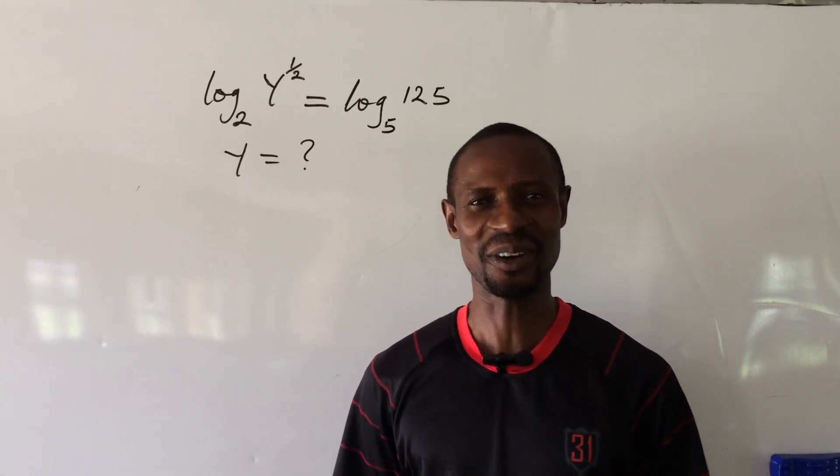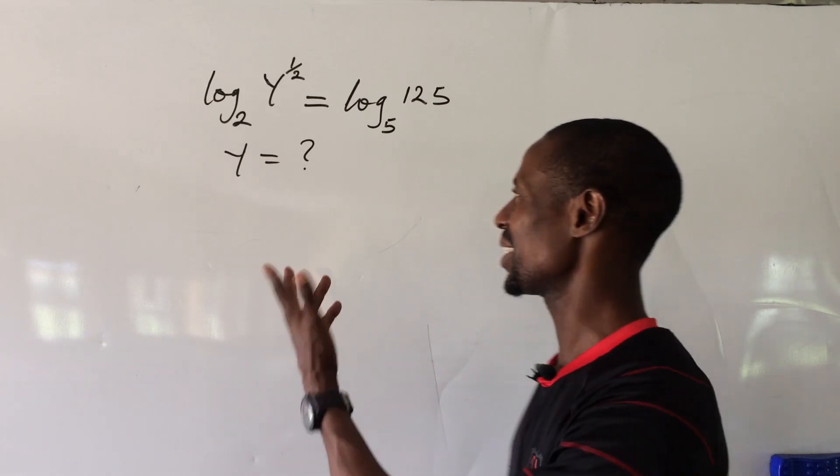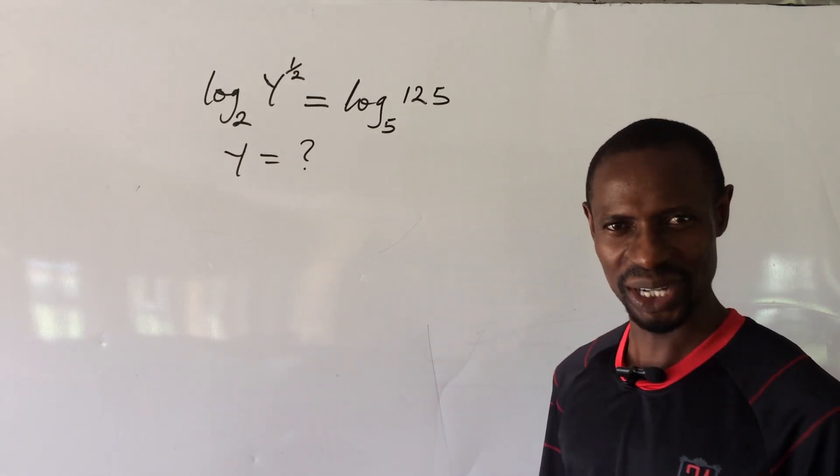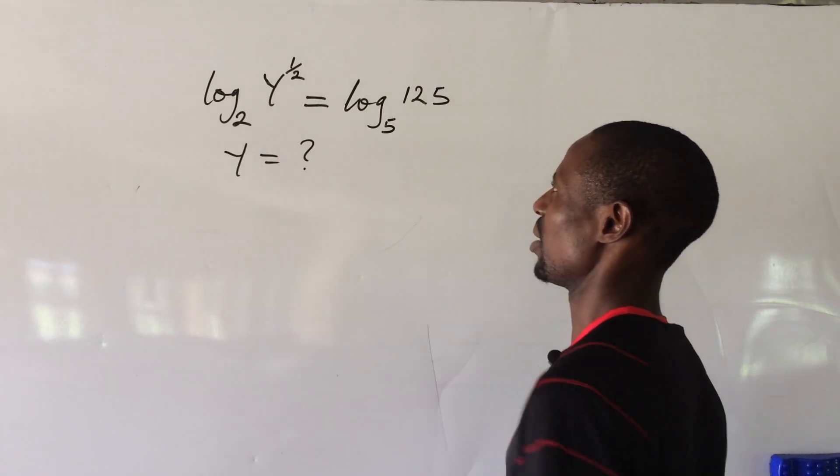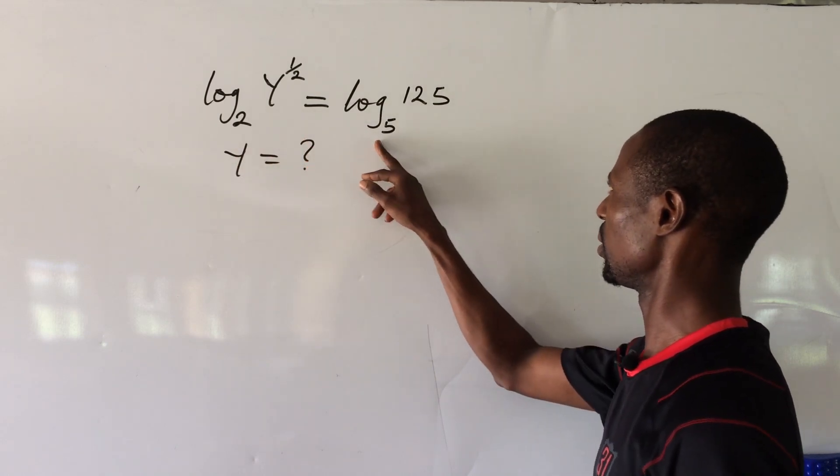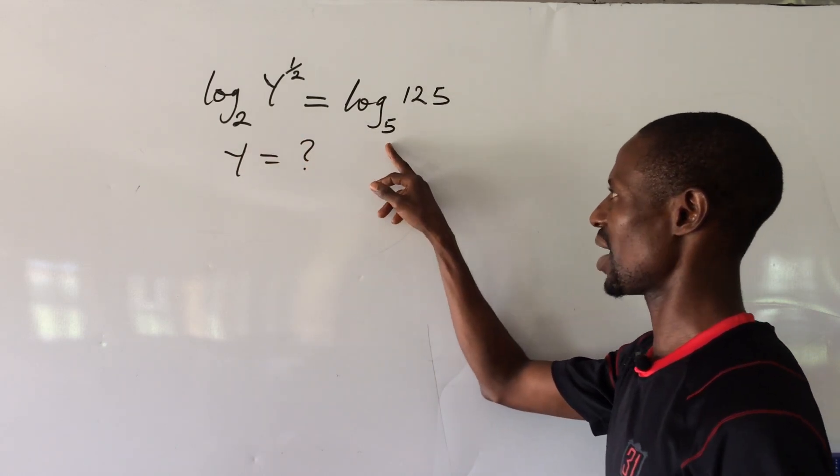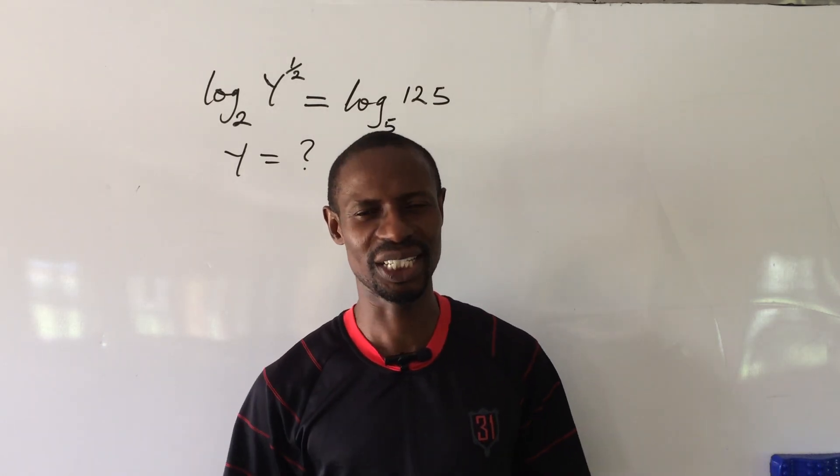Welcome everyone, this is Online Math TV. My name is Jakes Animal and today we have a challenge on logarithms - a simple one at that. The question reads: log y to the power of 1/2 base 2 equals log 125 base 5. Find y.